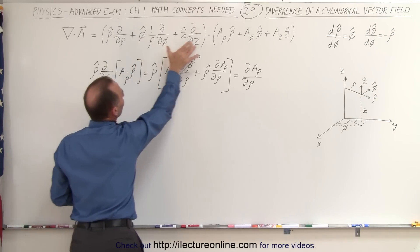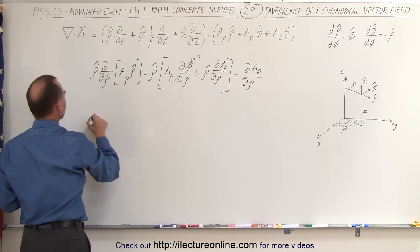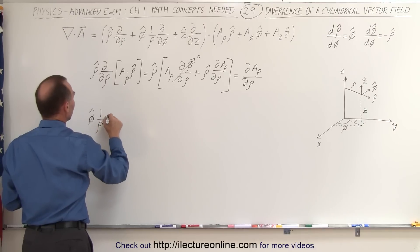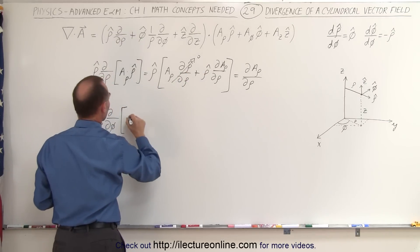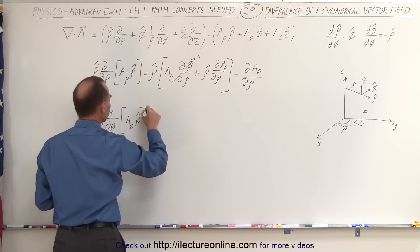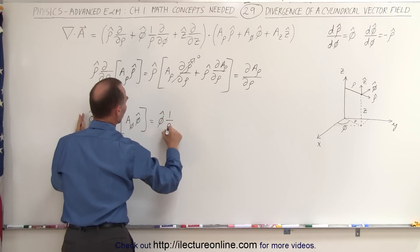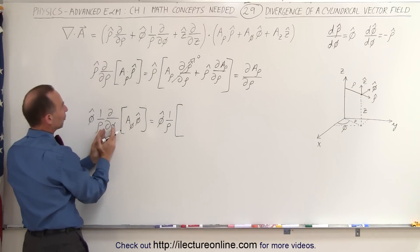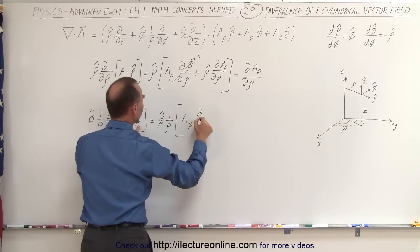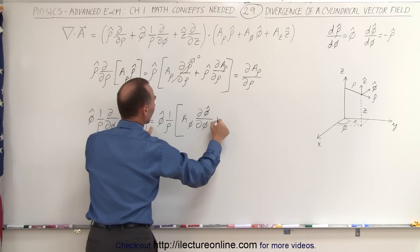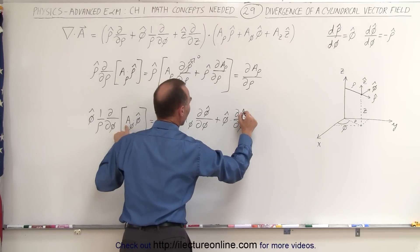Let's do one more example: phi-hat times one over rho times the partial with respect to phi, applied to the middle term A-sub-phi times phi-hat. Using the product rule, this equals phi-hat times one over rho, times: the first factor A-sub-phi times the partial of phi-hat with respect to phi, plus phi-hat times the partial of A-sub-phi with respect to phi.